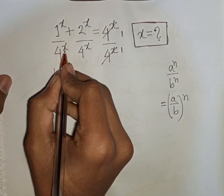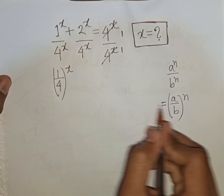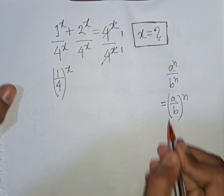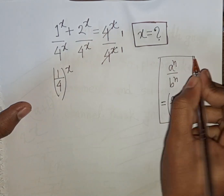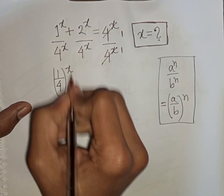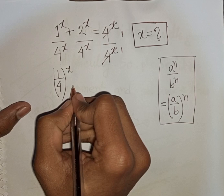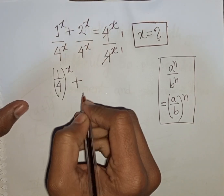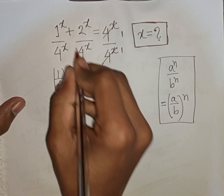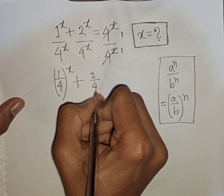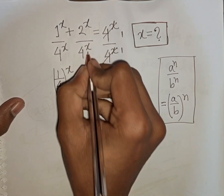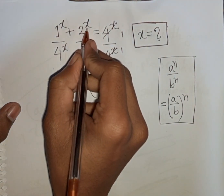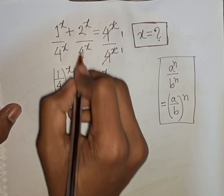That means x and x are the same power but different base. So according to this exponential rule, 2 power x divided by 4 power x means it will be (2 over 4) bracket power x, because again x and x are the same power but different base.